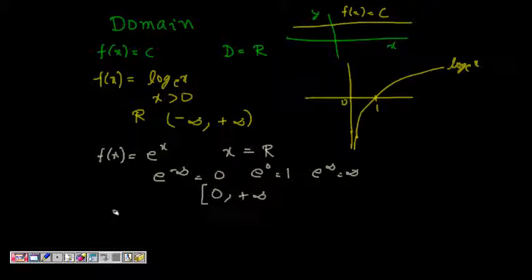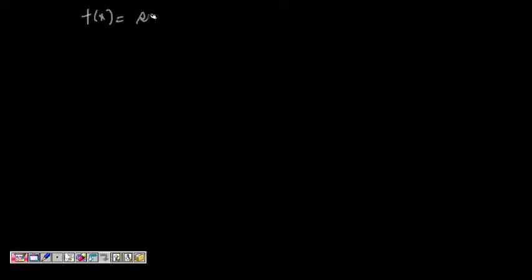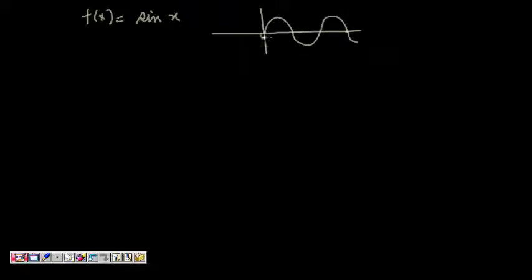Now let's look at some trigonometric functions. For f(x) = sin x, the sine function looks something like this — here is 0, this is π, 2π, and π/2.